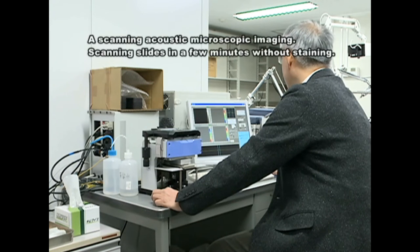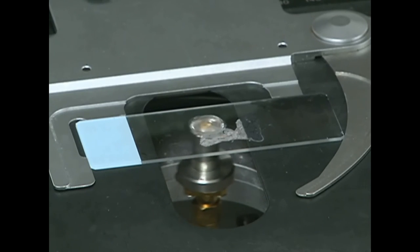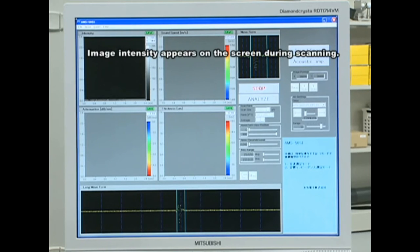This is the scene of the scanning slide. The slide is placed on the transducer upside down and scanned XY axis automatically. Flat sections in 10 micrometer thickness are necessary for scanning. It takes a few minutes to scan the whole area.